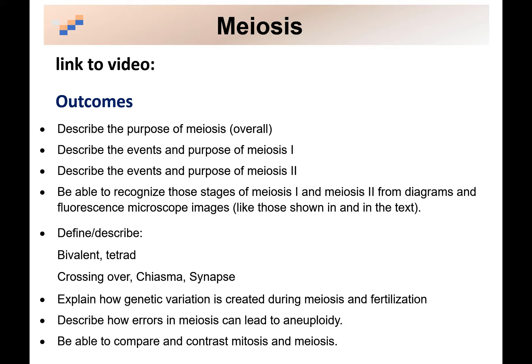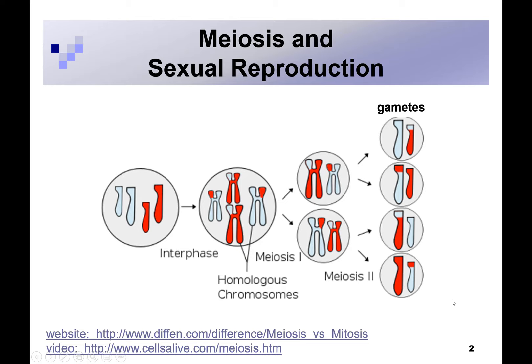This lecture is going to walk you through meiosis. Here are the outcomes; we will come back to those at the end of the lecture. So let's first talk about the purpose of meiosis. The purpose is to create gametes. In humans, gametes are your egg and sperm.